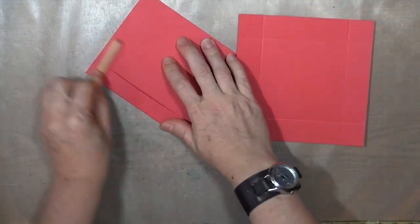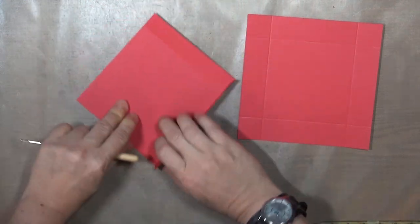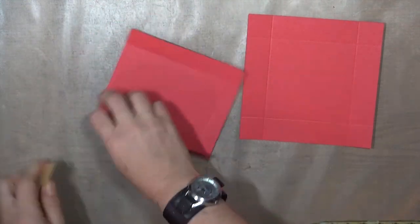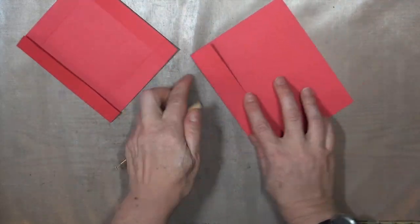Go ahead and crease all the score lines that you've made to get ready to create the box. I'm just using the side of my stylus here, but a bone folder or any other flat tool would work as well. We just want nice sharp creases on all the sides.